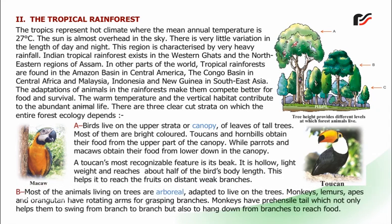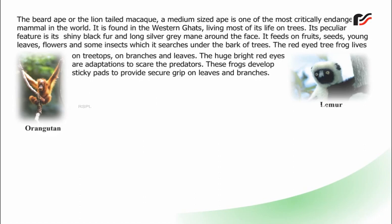Most of the animals living on trees are arboreal — adapted to live on trees. Monkeys, lemurs, apes, and orangutans have rotating arms for grasping branches. Monkeys have a prehensile tail, which not only helps them swing from branch to branch but also to hang down from branches to reach food. The bearded ape or lion-tailed macaque, a medium-sized ape, is one of the most critically endangered mammals in the world. It is found in the Western Ghats, living most of its life on trees. Its peculiar features are its shiny black fur and long silver-grey mane around the face.